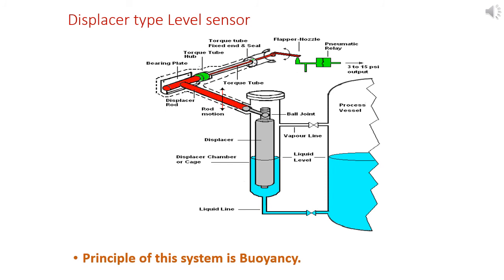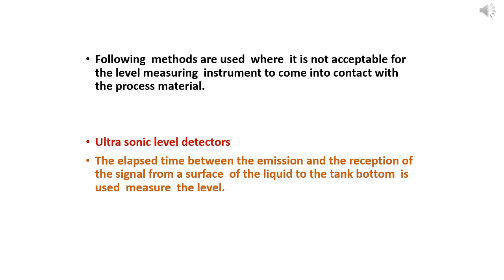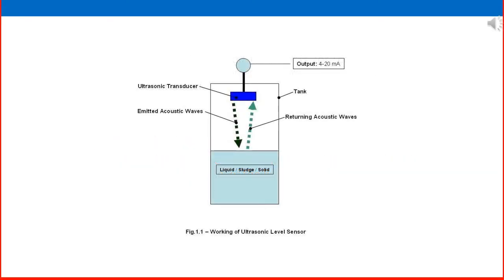Another method is used where it is not acceptable for the level measuring instrument to come into contact with the process material. One is ultrasonic level detector. The elapsed time between the emission and reception of the signal from the surface of the liquid to the tank bottom is used to measure the level. The ultrasonic level sensor is connected to the top of the tank. There is no direct contact between the liquid and the measuring device. It emits ultrasonic or acoustic waves, and the returning wave is used to measure the level. This is an advanced type of level measuring device.